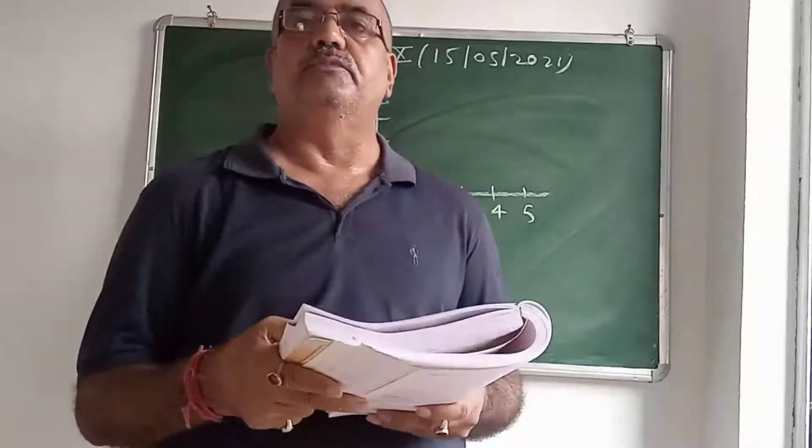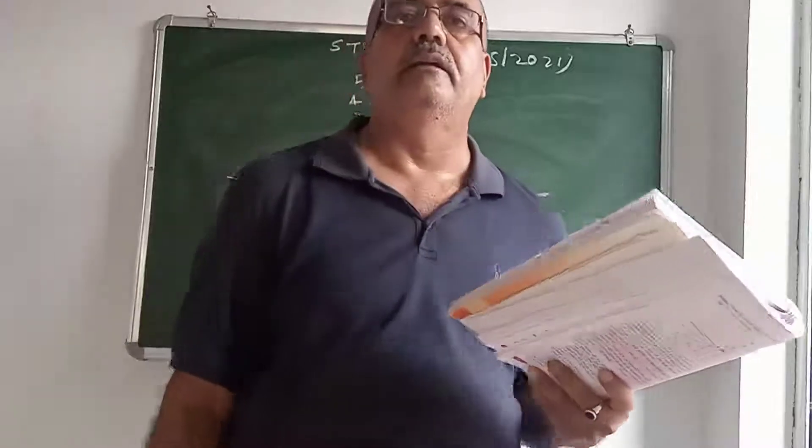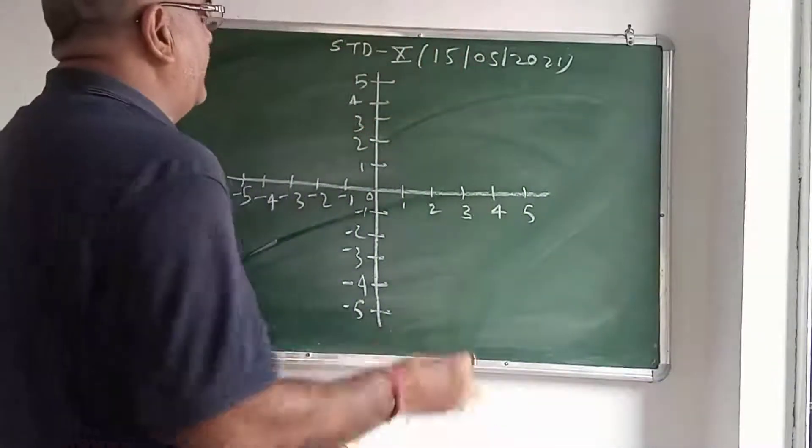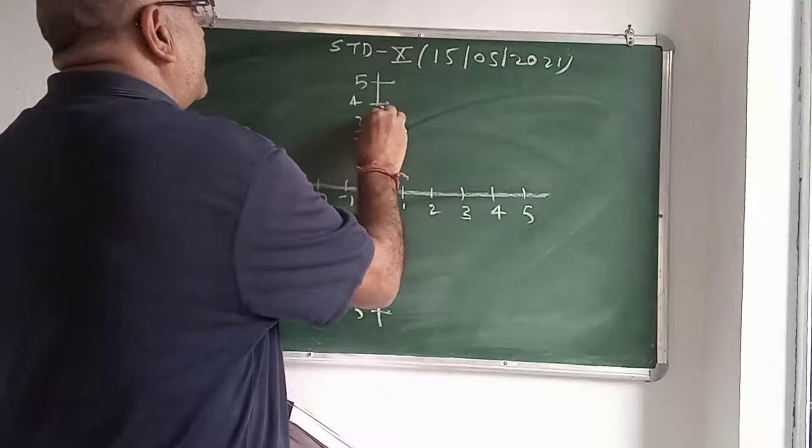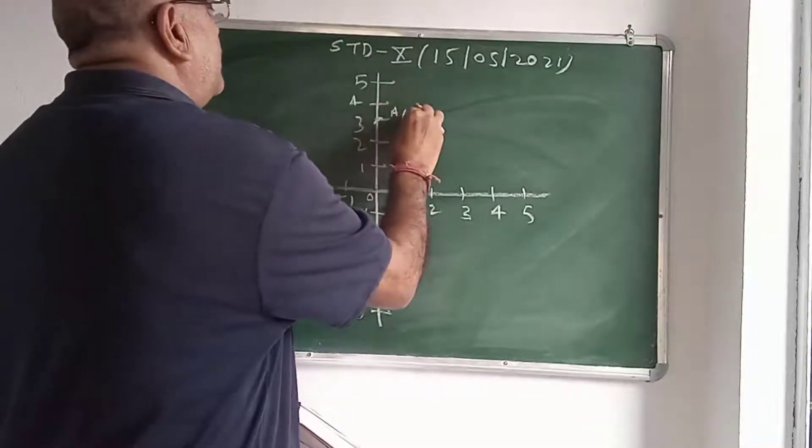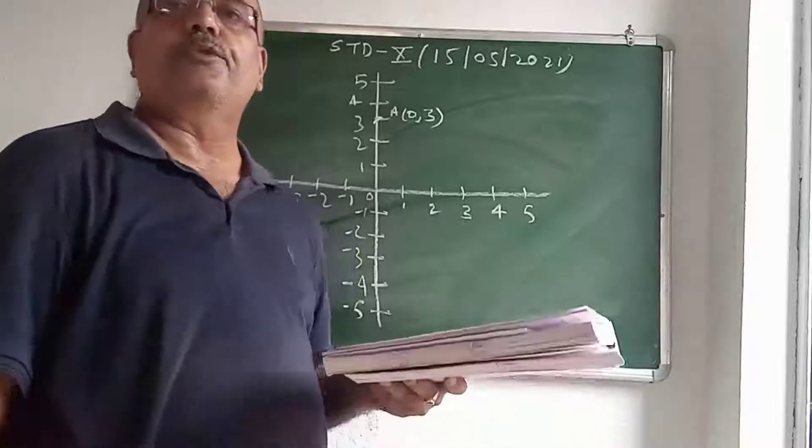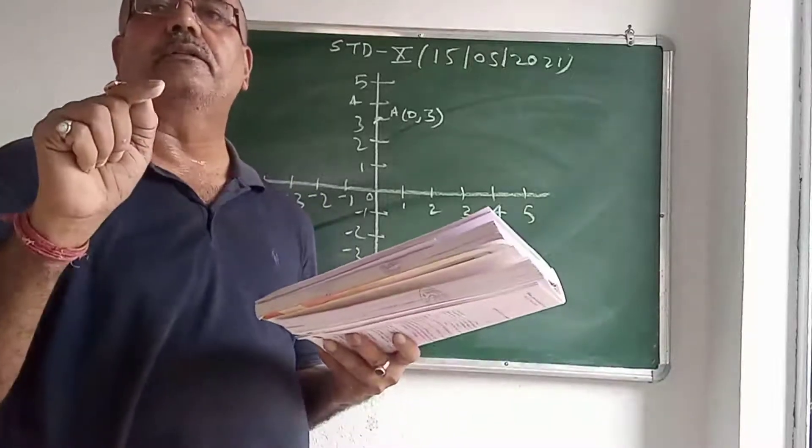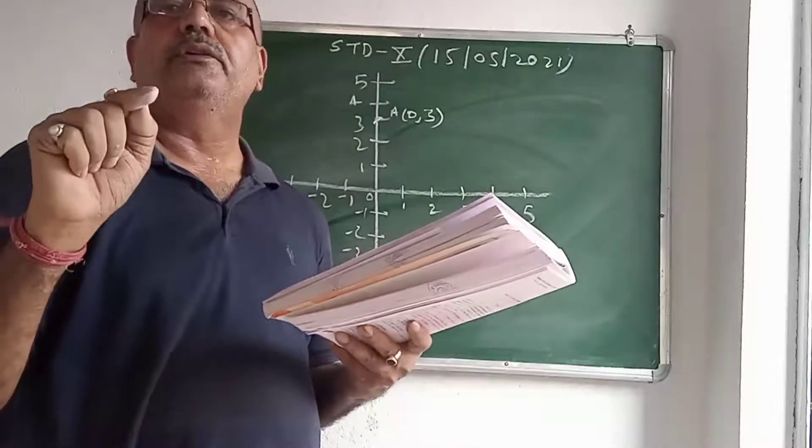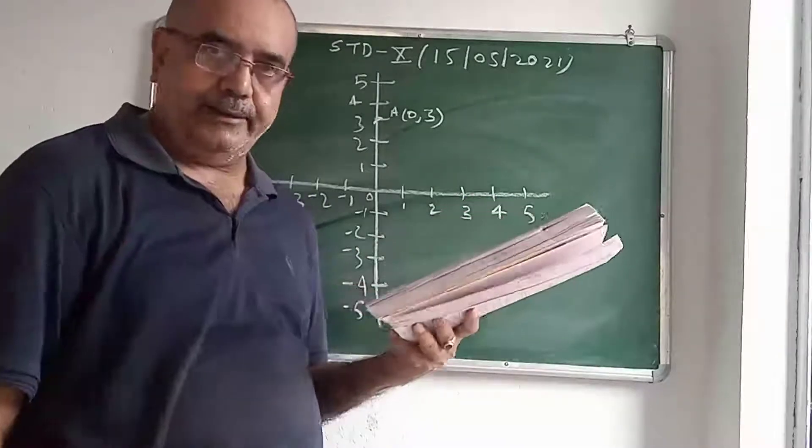Now give an example 9. A(0,3) an invariant point lies on the line. A(0,3). This is the point A, 0, 3.